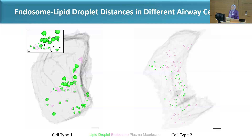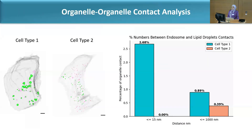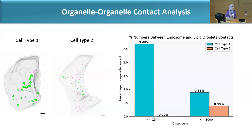Here is an example comparing two cell types. After running the script on both cells, we can see that cell type 1 had a contact distance of approximately 2.68, while cell type 2 showed no contact. This is still something we are actively studying, but it already provides information about the interaction and spatial relationship between organelles in these different cell types.